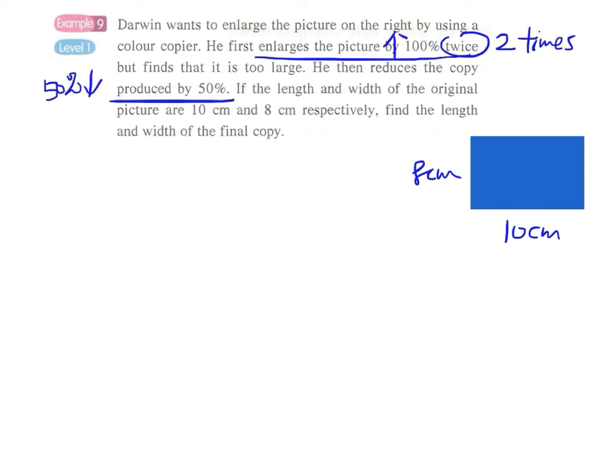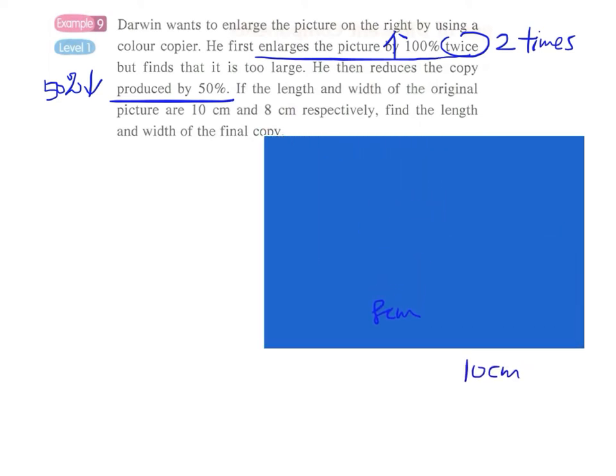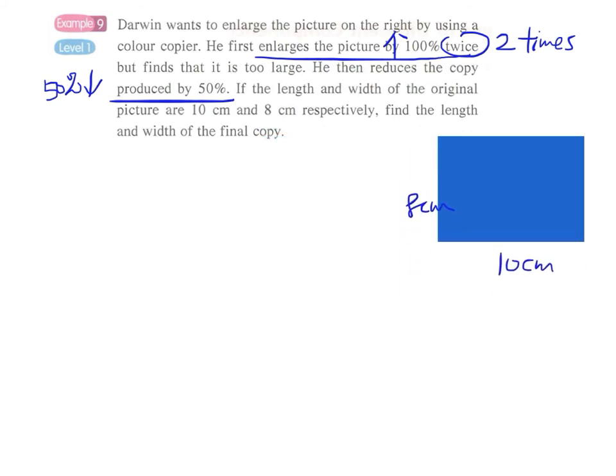We have to find the final length and width of the copy. The image is enlarged by 100% twice and then reduced by 50%.